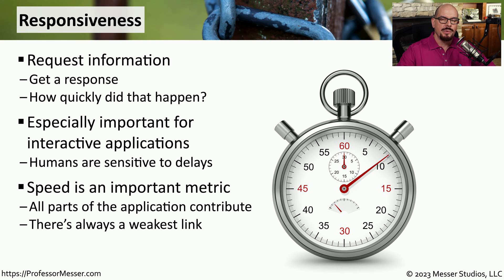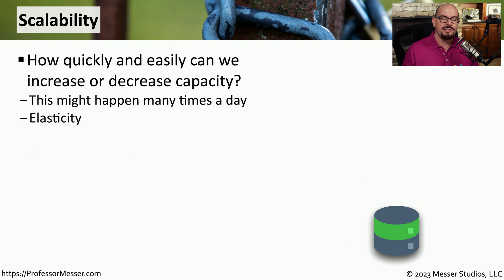When we calculate responsiveness, we tend to look at the overall functions of an application. Some of those functions may be occurring very quickly and are very responsive, whereas others may require additional work and it might take more time to receive a response. Many of the applications we use may be subject to a different amount of usage depending on what time of the day it might be or whether it's the end of the quarter. If an application is highly used, we might want to increase the capacity of that app so that everybody can use it without running into delays.